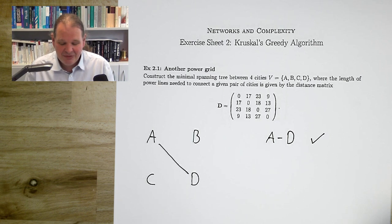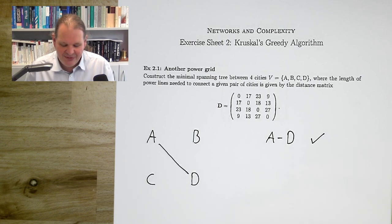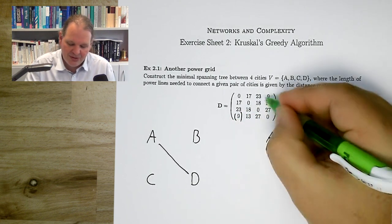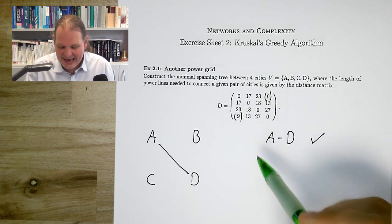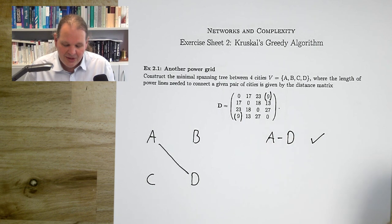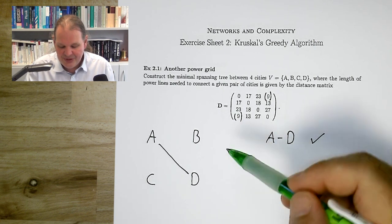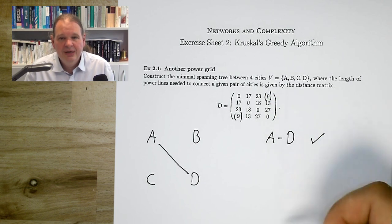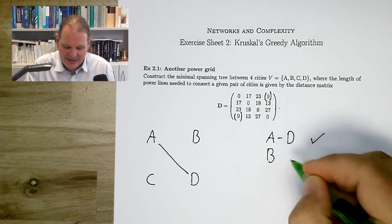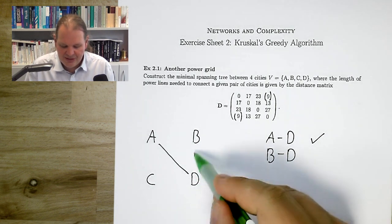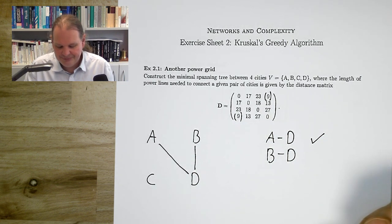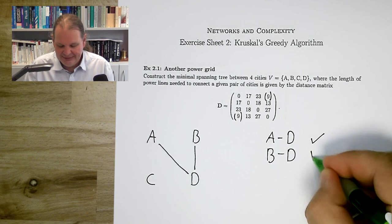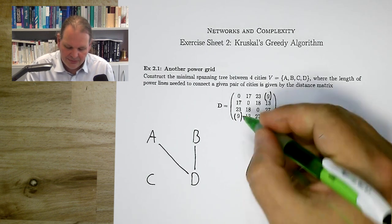Another good trick: create a record of what you actually did, and mark which ones you've already considered — that makes it easier to find the next shortest link. The next shortest link is 13, between nodes 4 and 2, meaning B and D. Should we build this? Yes, because it reduces the number of components to two. We build the 13.